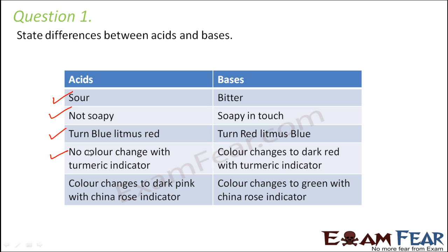Acids with turmeric indicator, there is no change in color but bases they turn dark red with turmeric indicator. With china rose indicator, the color of acids changes to dark pink whereas for bases, it changes to green. So the behavior of acids and bases are completely different with all the indicators.